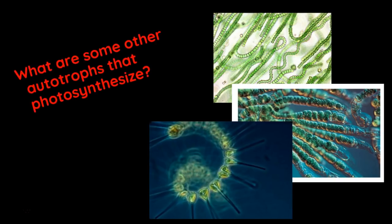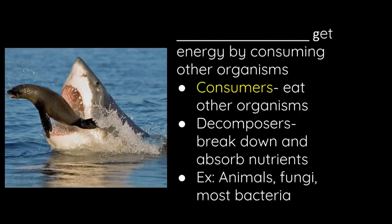We have some other ones, and you recognize most of these are green, so they're still going to use photosynthesis. We have things like cyanobacteria, and those use the sun. These are kind of the most primitive photosynthetic organisms. Algae, and then phytoplankton — just think of Spongebob and Mr. Plankton, and he is green as well because he's doing photosynthesis.